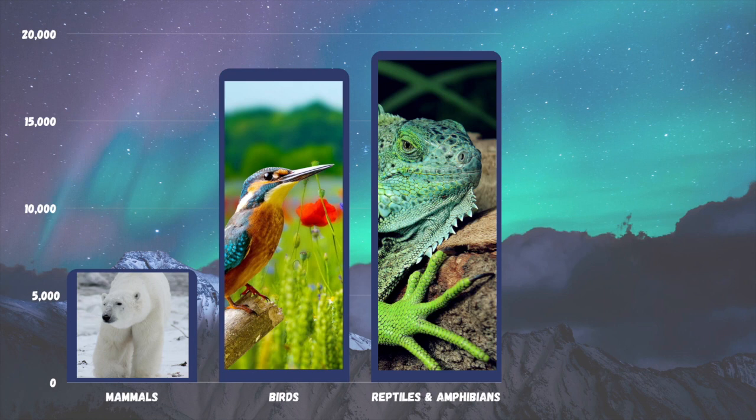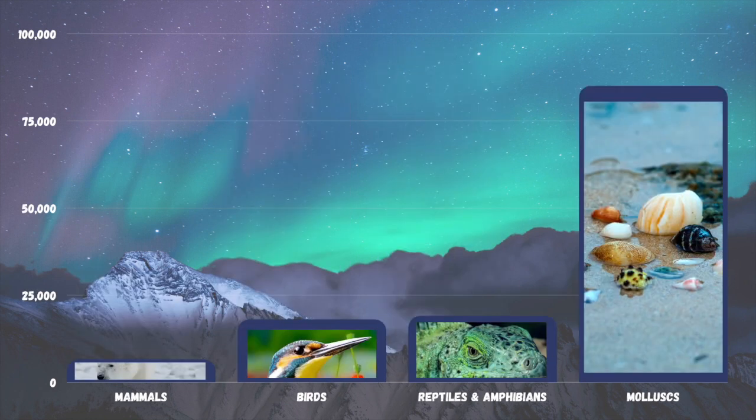Let's see what happens when I add another bar to my graph: Mollusks. There are 85,000 estimated species of mollusk on earth. Doesn't that make all the other bars look small in comparison? Remember that mollusks are invertebrates — they include snails, slugs, and cephalopods like the nautilus and the octopus.